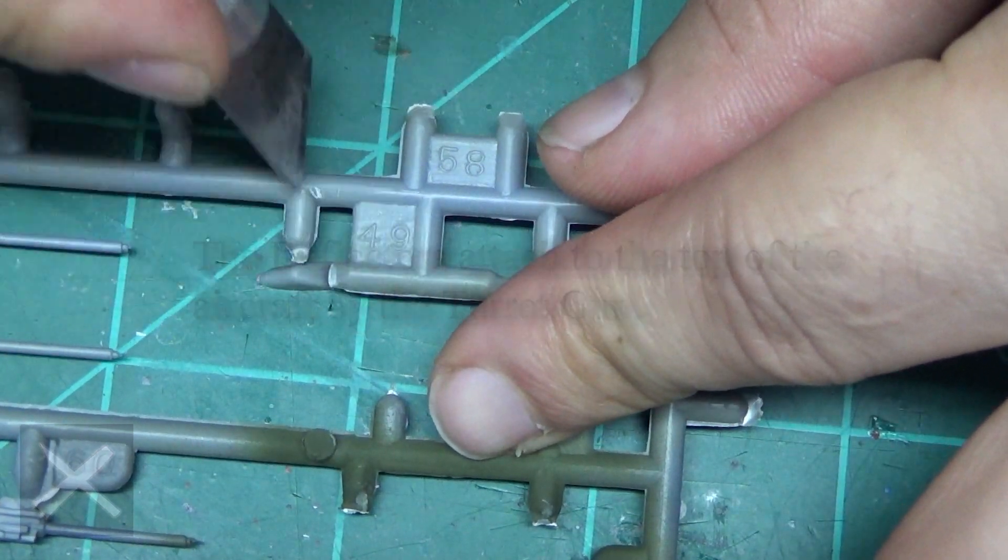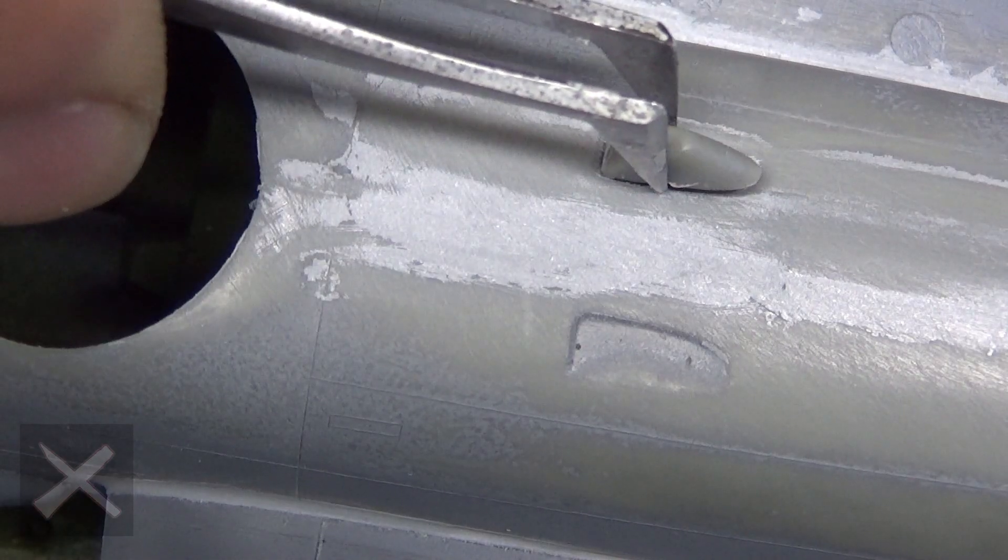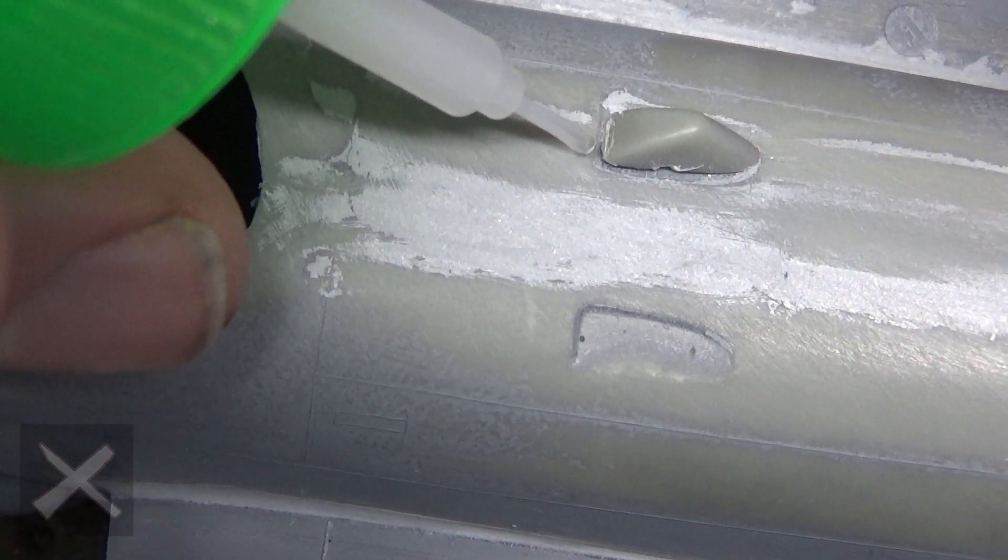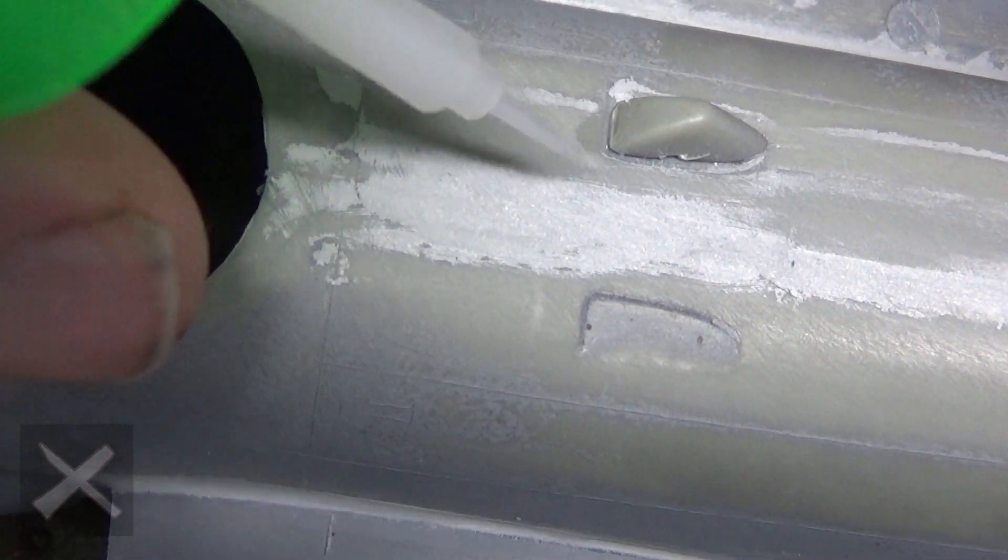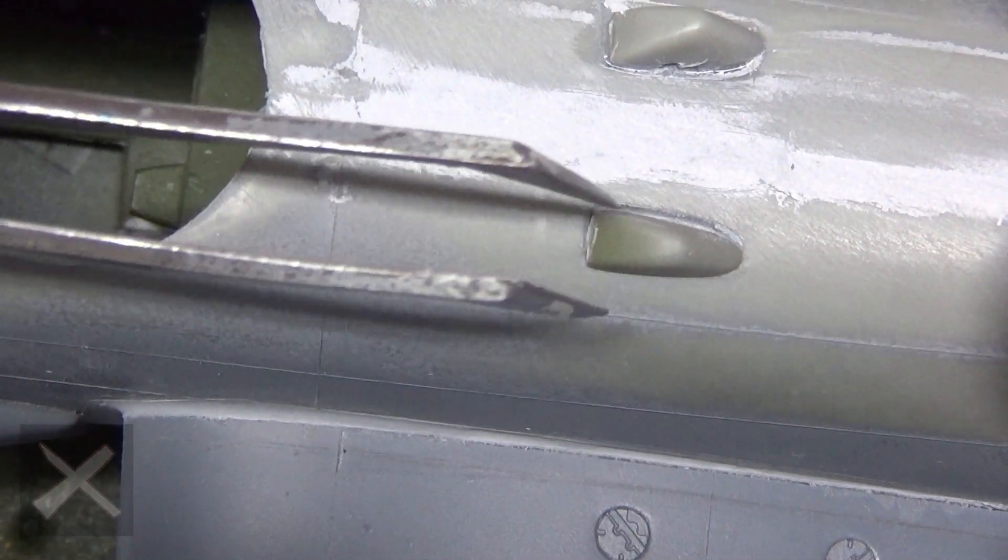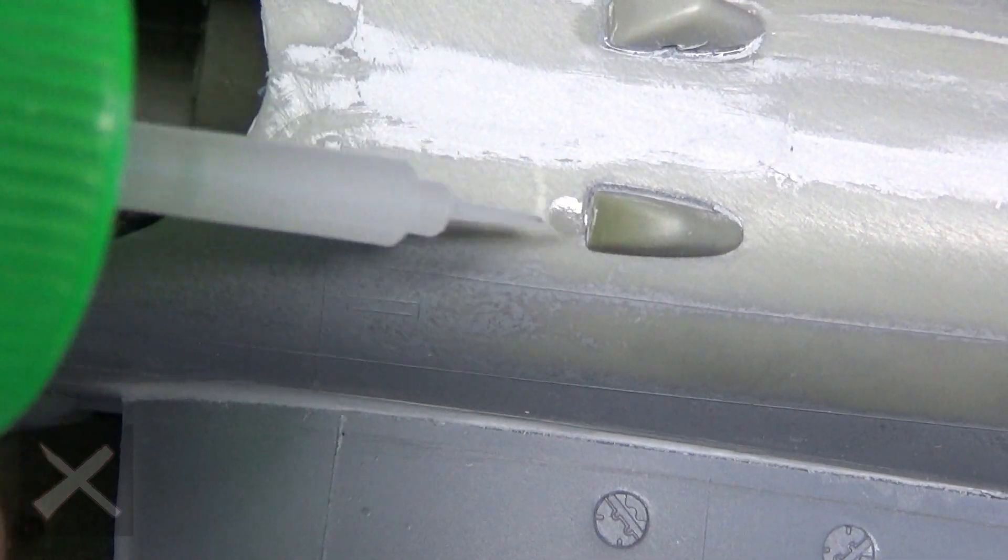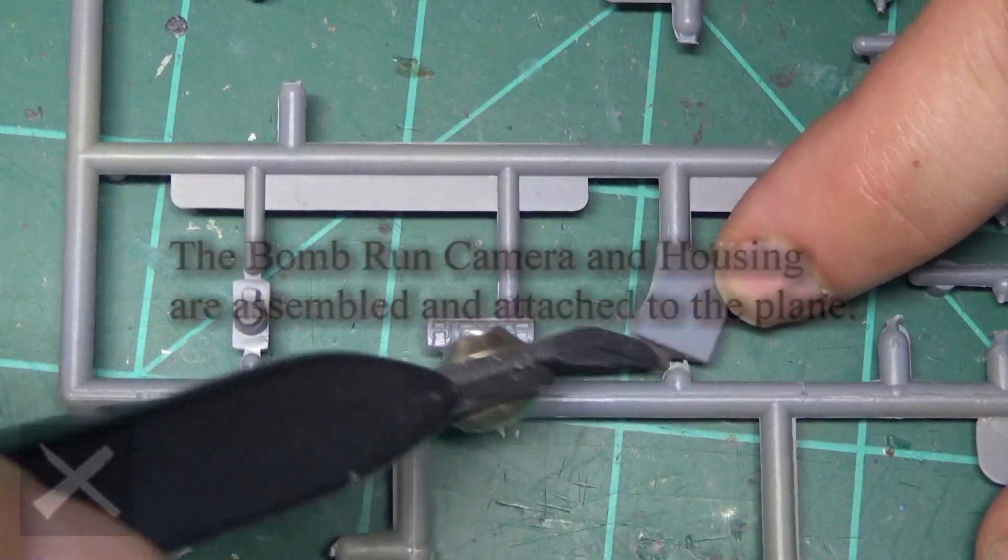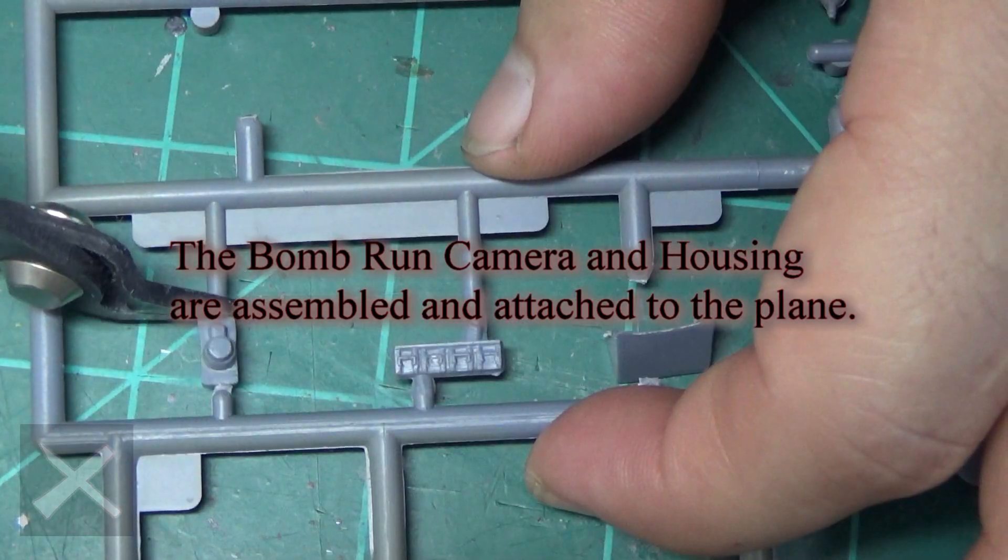We got these deflectors. They go on top of the aircraft behind the gun turret, right there. Make sure your orientation is correct for each one of these. That's the second one. You see that glue just sucks right up on there.